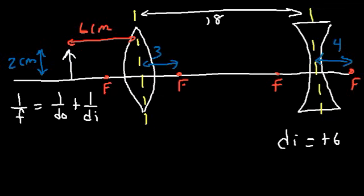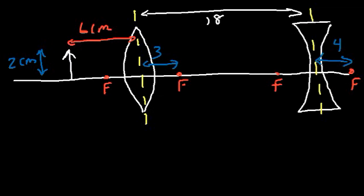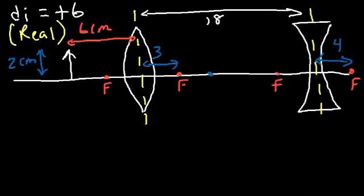Whenever the object is placed at a distance of 2F — twice the focal length — DO and DI are equal to each other. So the image should be somewhere around this point. Because DI is positive 6, it's a real image. Whenever DI is positive, the image is going to form on the right side. If DI is negative, you're going to have a virtual image, which forms on the left side of the lens.